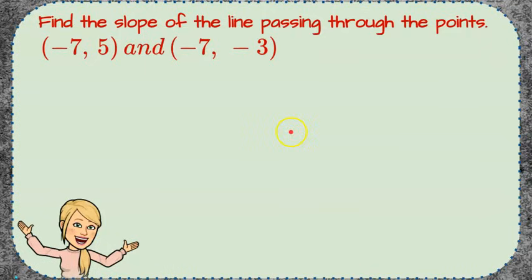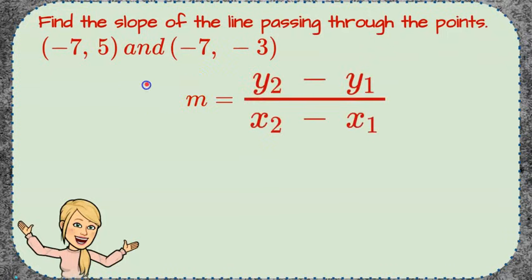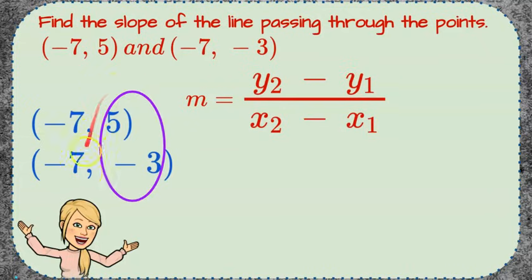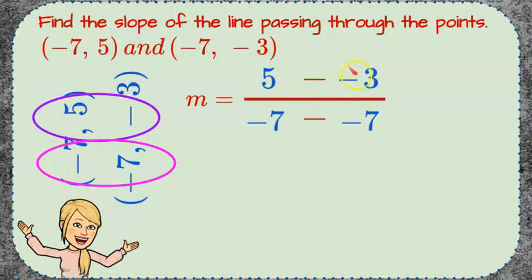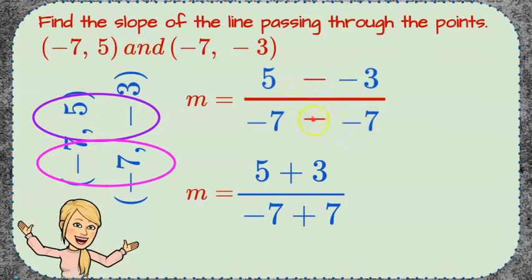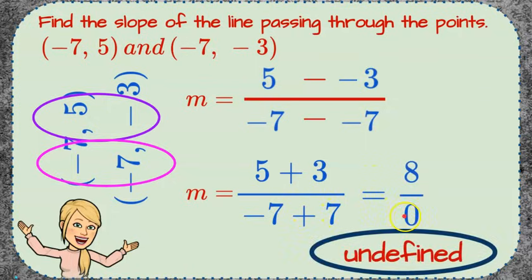Your turn — please pause the video and find the slope of the line passing between these two points, then come back and hit play when you're done. Welcome back. Using our slope formula, we stack the two points, place y-coordinates in the numerator and x-coordinates in the denominator. We get five minus negative three over negative seven minus negative seven, which becomes five plus three over negative seven plus seven: eight over zero. We cannot divide eight by zero — that is undefined. So this is a vertical line.